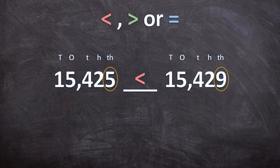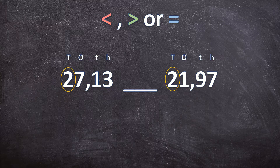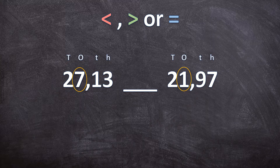Now we have 27,13 and 21,97. Starting at our biggest place value — the tens — we have two and two, so they are the same. We move on to the ones: we have seven and one. The seven is bigger than the one, so 27,13 is going to be bigger than 21,97.